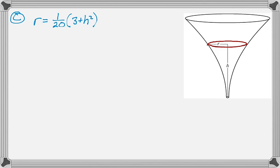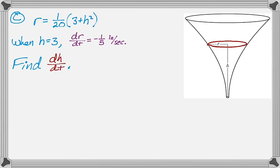But basically I'm told dr/dt. So when h is 3, I'm told that dr/dt is negative 1/5 inches per second. Okay. That's good. That's really all I need. So I'm asked to find dh/dt at that time. So let's see if we can do this. So find dh/dt at that time.